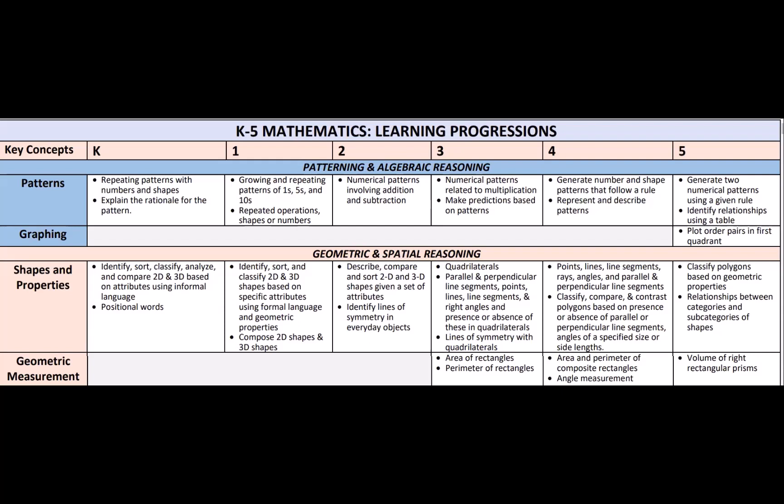Fifth grade is where we bring it all together. We take the work of classifying, comparing, and contrasting polygons by the absence or presence of attributes to determine that polygons sharing the same attributes can be classified into a subcategory. For example, a square can be a subcategory of a rhombus because it has all the attributes of a rhombus. This means that attributes belonging to a category of a 2D figure also belong to all subcategories of that category. Previously we showed this work by creating a hierarchy; with our new standards, students are not required to create a hierarchy—we now show this relationship using Venn diagrams and words.